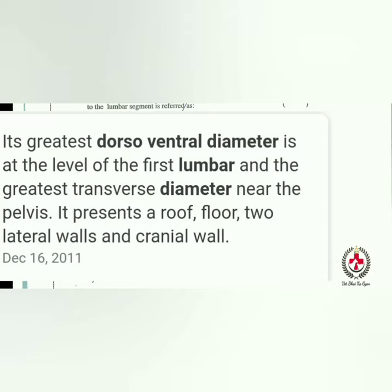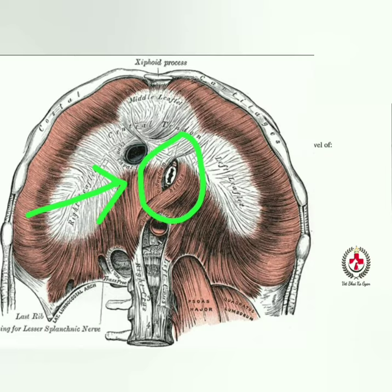In ruminants, maximum dorsal-ventral diameter of the abdominal cavity is at the level of the first lumbar vertebra. The opening of the esophagus in the diaphragm is called the hiatus esophagus, as shown in the picture. The cross section of the right ventricle is crescentic in shape.